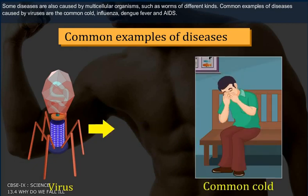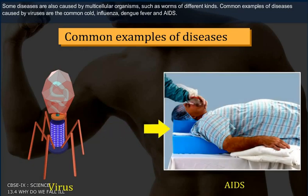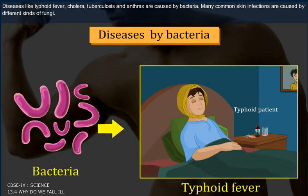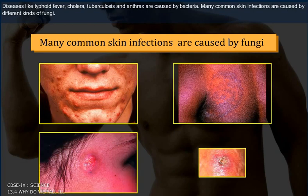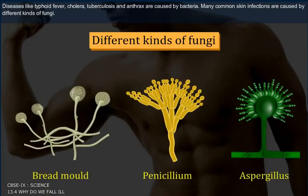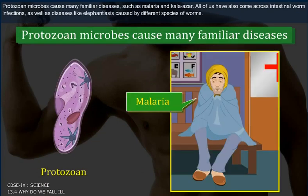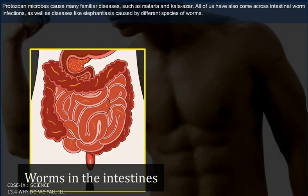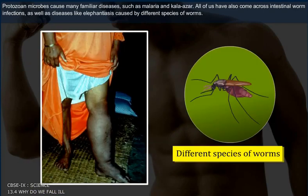Common examples of diseases caused by viruses are the common cold, influenza, dengue fever, and AIDS. Diseases like typhoid fever, cholera, tuberculosis, and anthrax are caused by bacteria. Many common skin infections are caused by different kinds of fungi. Protozoan microbes cause many familiar diseases such as malaria and kalazar. All of us have also come across intestinal worm infections as well as diseases like elephantitis caused by different species of worms.